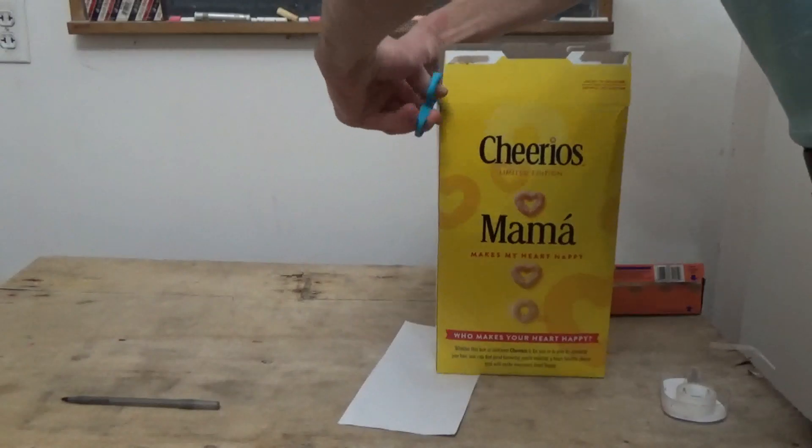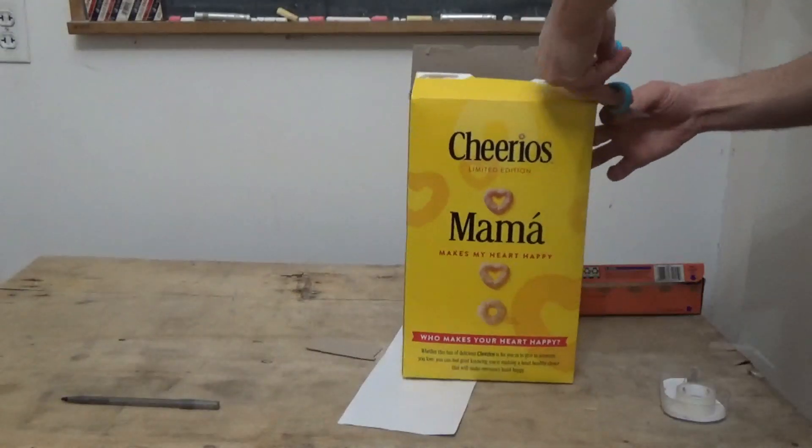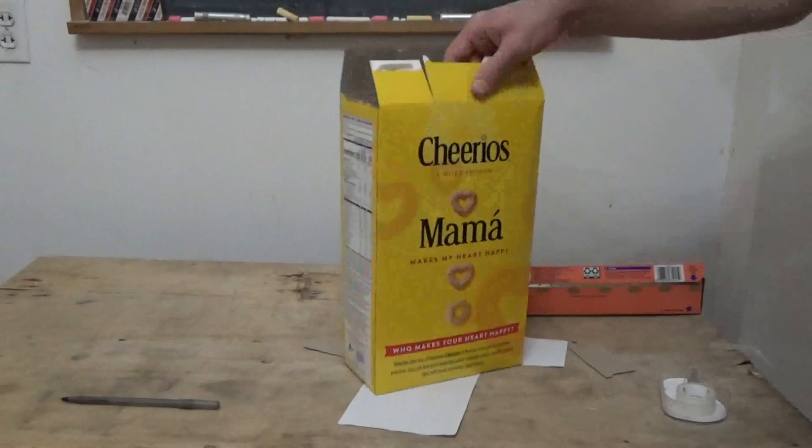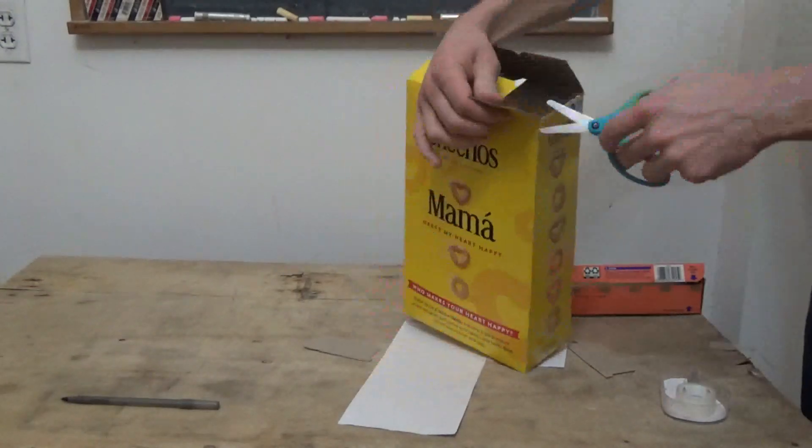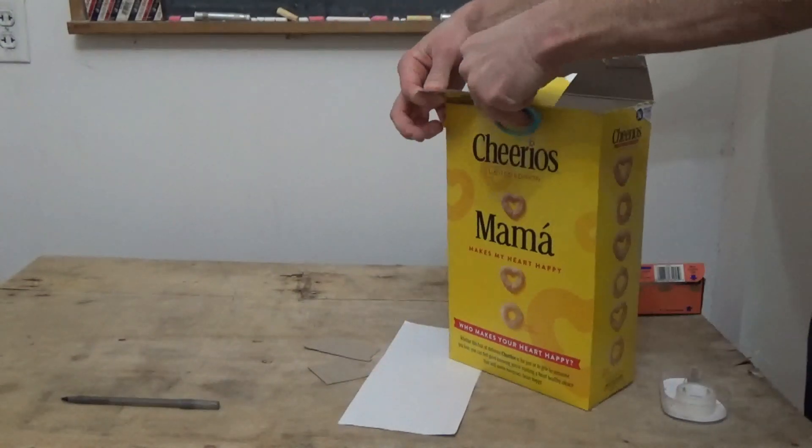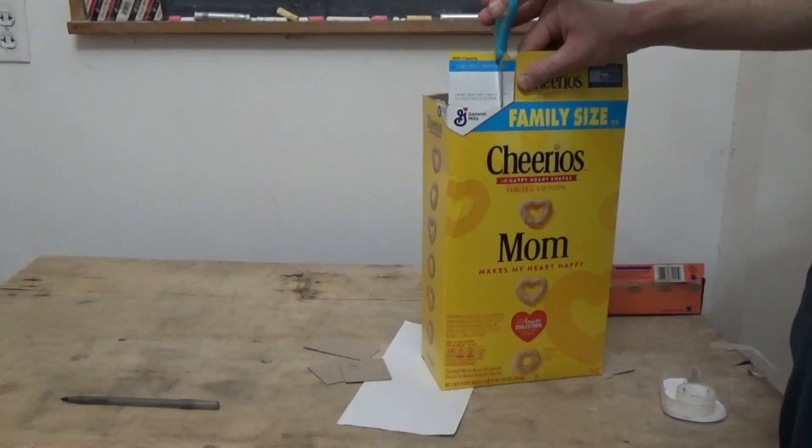All right, now with the top of the box, we'll cut these flaps off, and then we want to cut off a couple inches from each side of this, and we'll do this to the other side too.